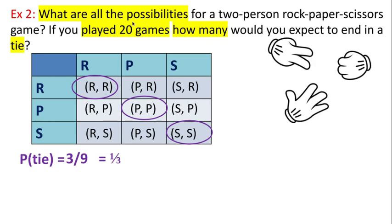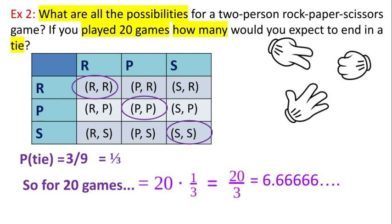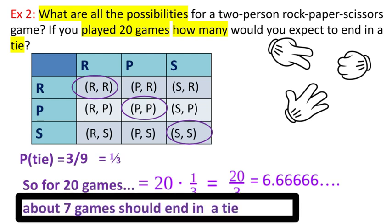And since I'm playing 20 games, I'll multiply 20 times one third, pause the video, do the math. I get 20 over three, which is improper. So I'll use some division and I get 6.666 repeated. So about seven of the games should end up being a tie if I play 20 games.